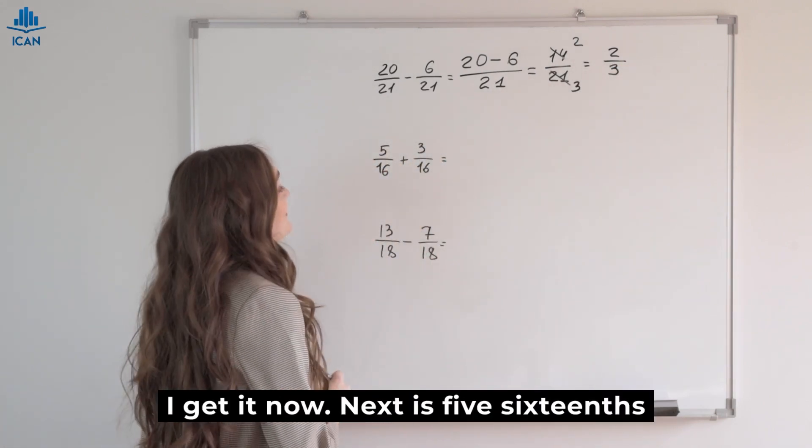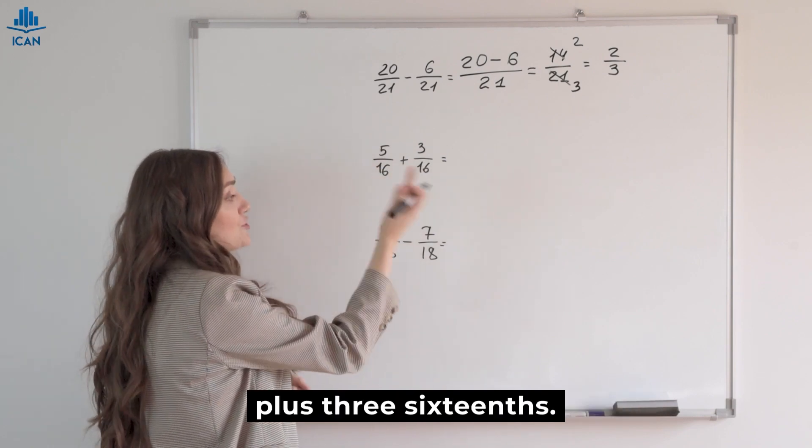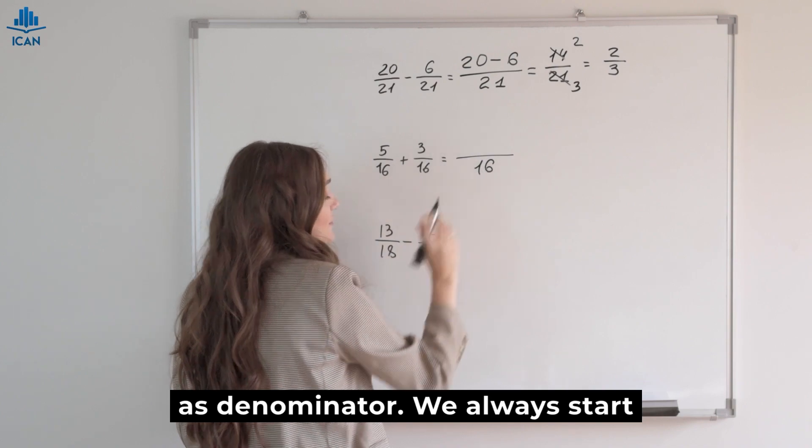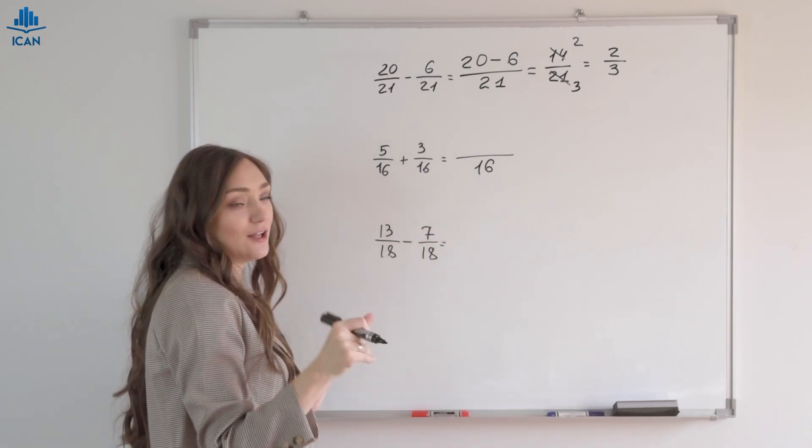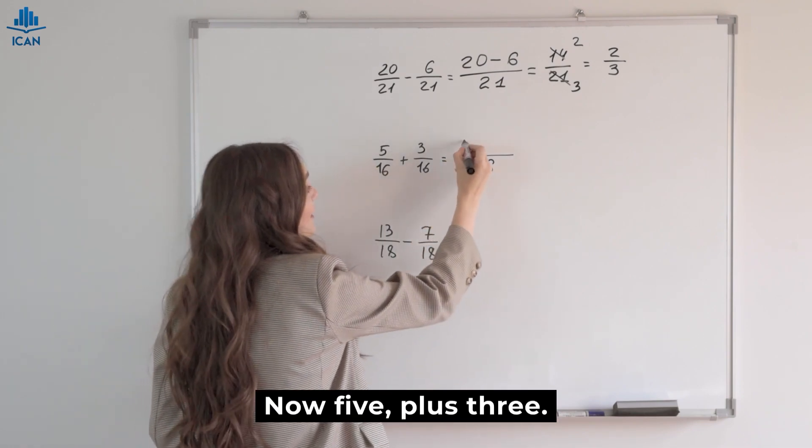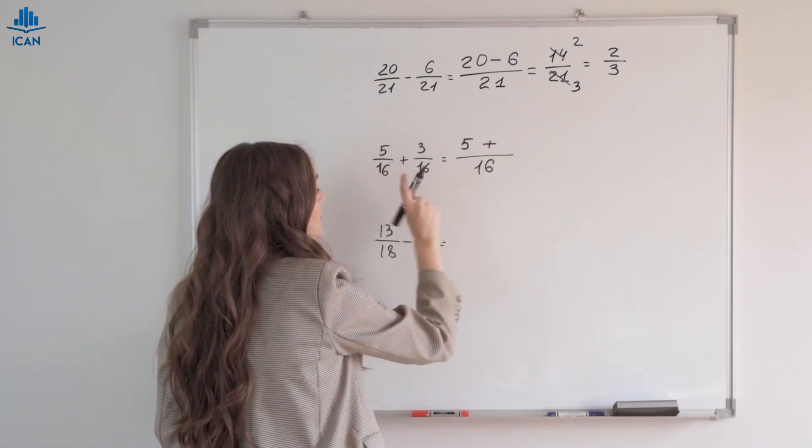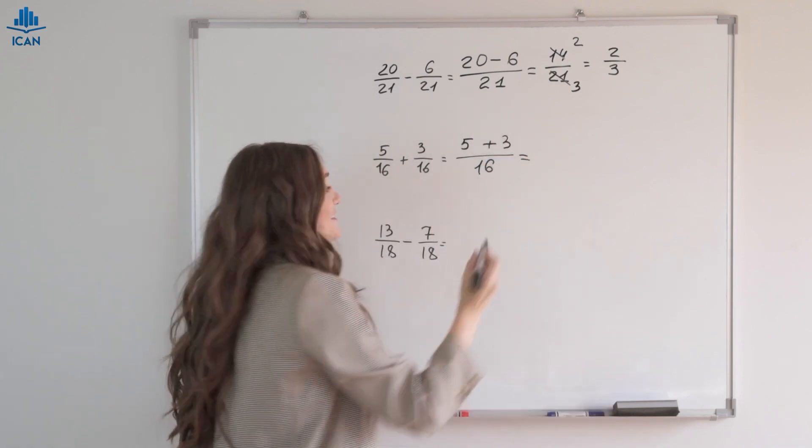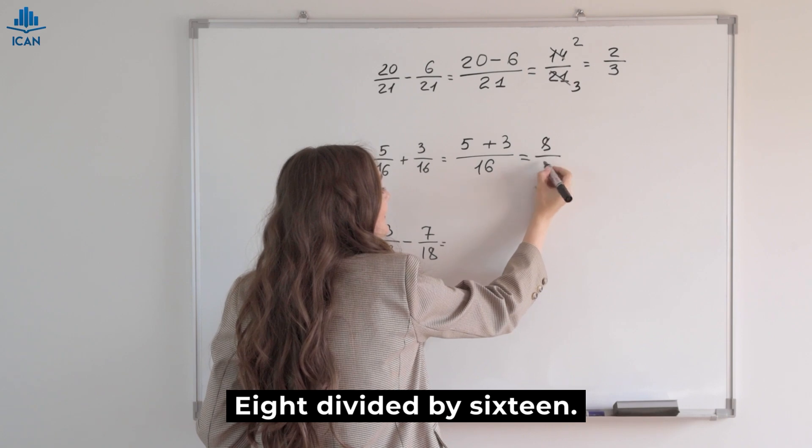I get it now. Next is five-sixteenths plus three-sixteenths. Sixteen as denominator. We always start with the denominator. Now five plus three. Five plus three. Quick math.